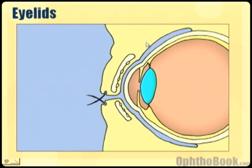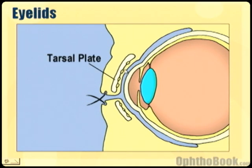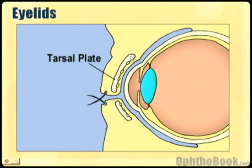The eyelids are actually formed by two layers. There's an anterior lamella, which has the muscles and things like that, and there's a posterior lamella, which is formed by the tarsal plate. This tarsal plate is a layer of tissue that's somewhat tough and gives the eyelids its shape. Some of the muscles that open and close the eye insert on this tarsal plate.